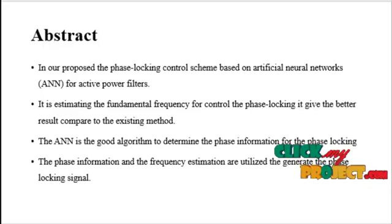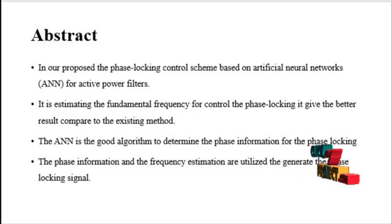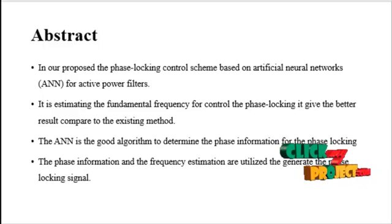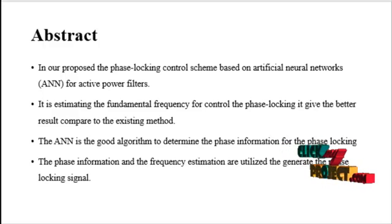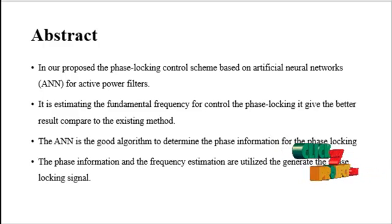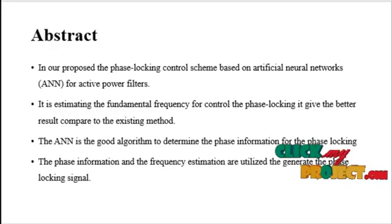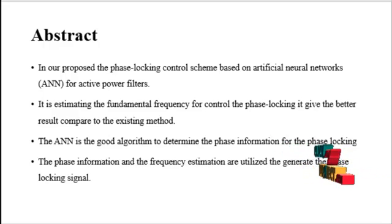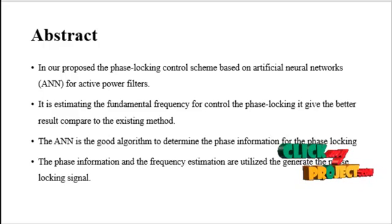The phase locking control scheme is based on artificial neural networks for active power filters. Phase locking is achieved by estimating the fundamental frequency. As part of generating the phase locking system, the non-linear approach is modified to track the supply frequency. To improve the accuracy of the frequency estimation when the supply voltage contains harmonics, a filtering stage is introduced.